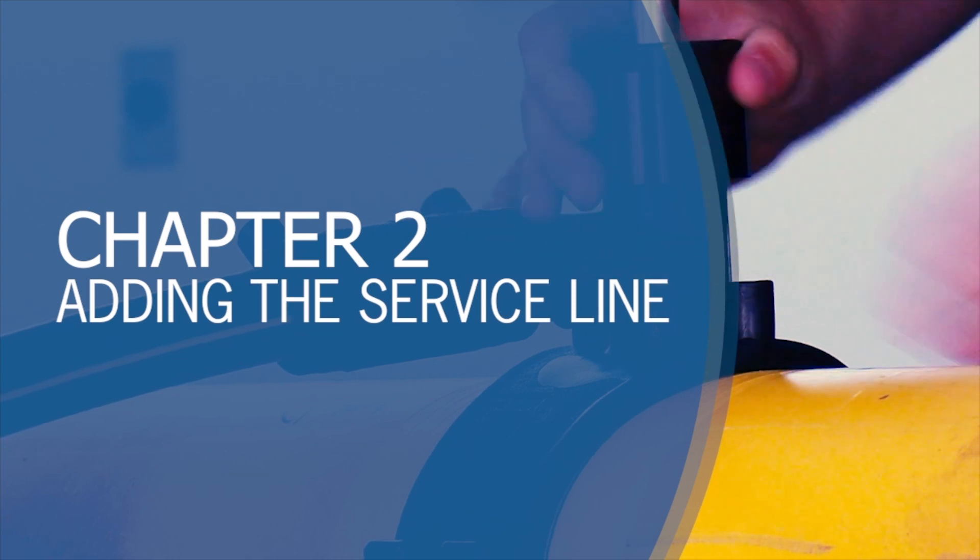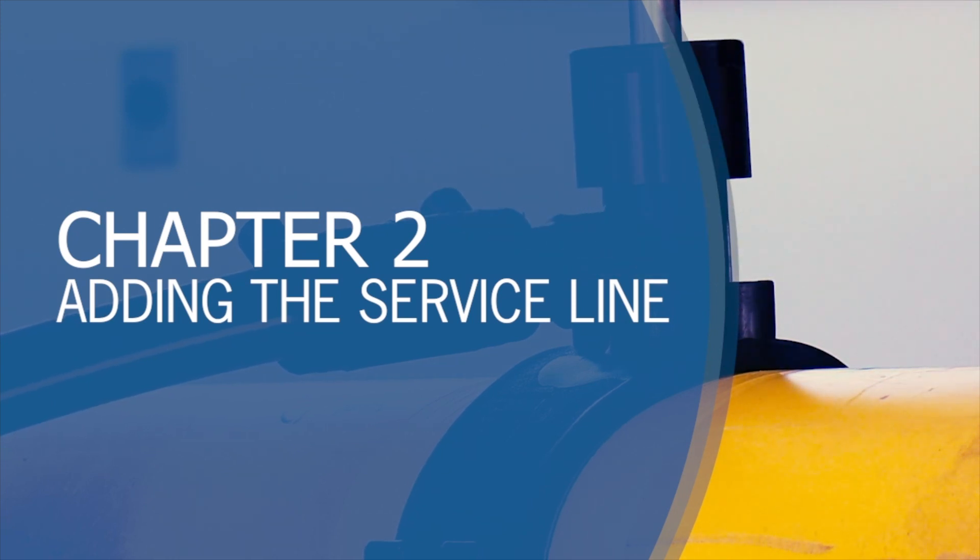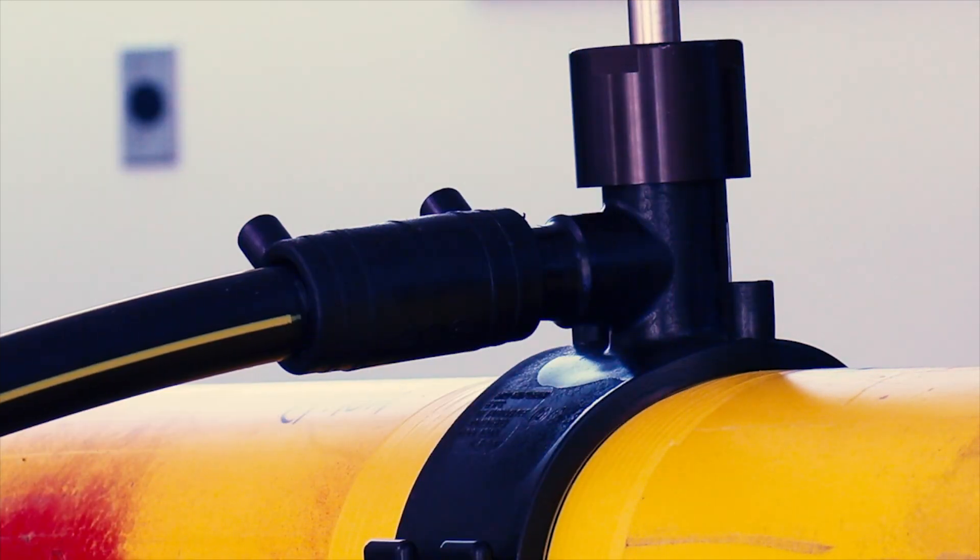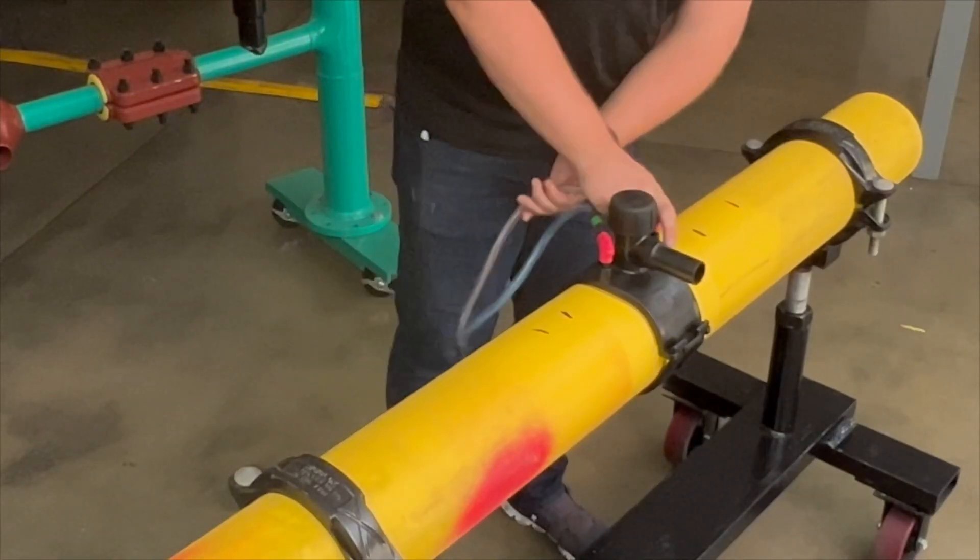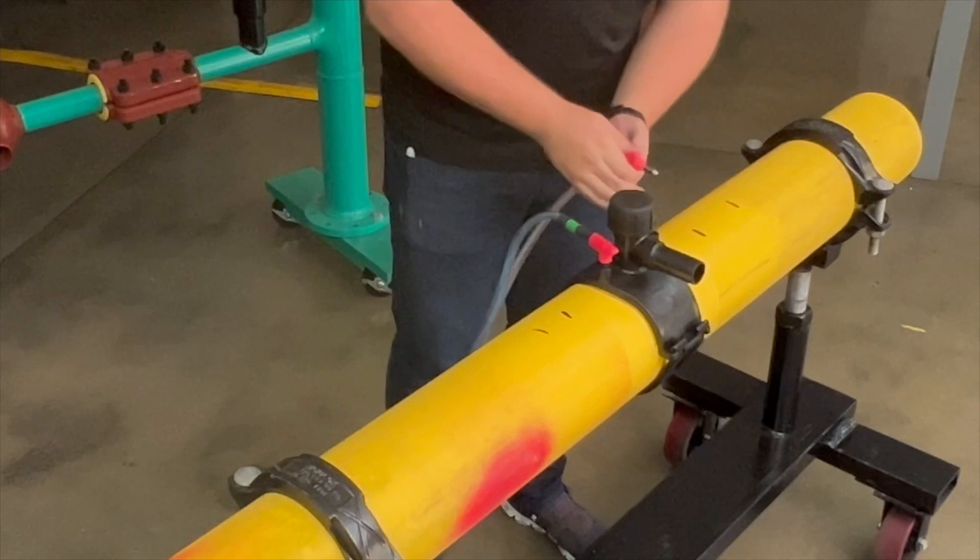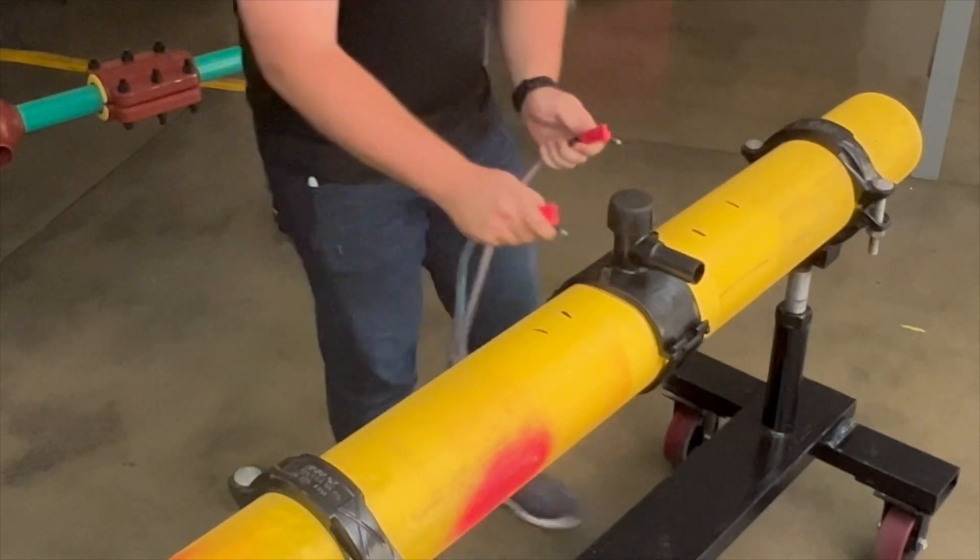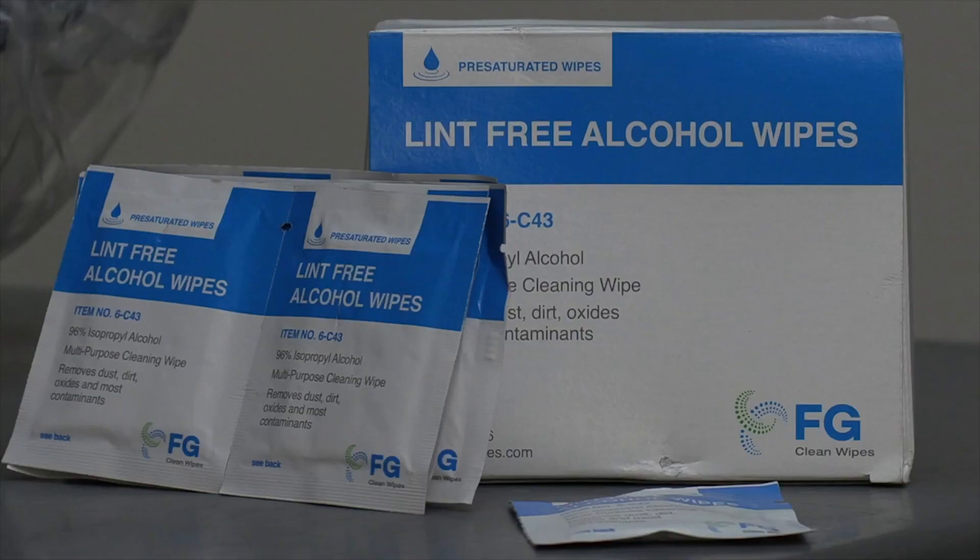Chapter 2: Adding the service line to the outlet. Now that the tap tee has been fused and cooled, you'll need to install the service line. The first step is to prep the outlet of the tap tee for fusion. If any loose dirt or dust is present, remove it with a damp cloth followed by an alcohol wipe.